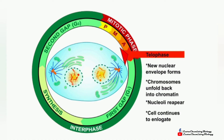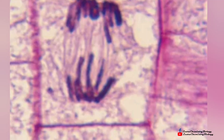The last phase is telophase. Telophase is a very crucial part of cell division. New nuclear envelopes are formed, chromosomes unfold back into chromatin, nucleoli reappear, and the cell continues to elongate towards the poles. You can see the microscopic picture of telophase.